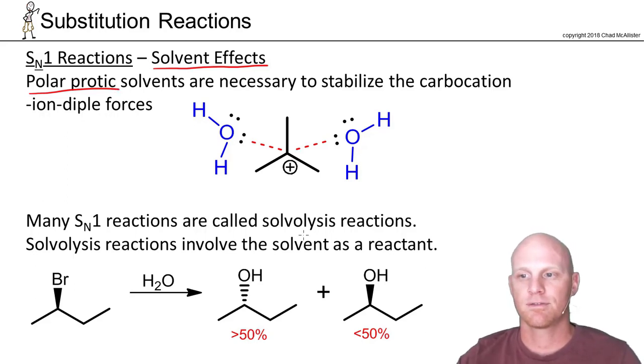In this case, I'm showing the ion dipole forces that result when water solvates a carbocation. So it turns out SN1 is all about carbocation formation, and if the solvent's not protic, you're not going to form that carbocation. It won't be stable enough in an aprotic solvent to form, typically. So your solvent has to be protic, and water and alcohol will be the most common.